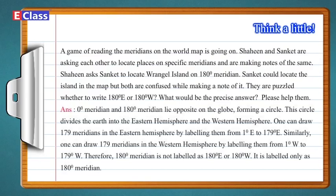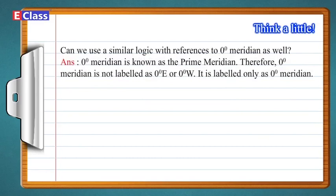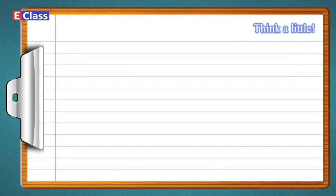Answer: The 0-degree and 180-degree meridians form a circle that divides the earth into the eastern hemisphere and the western hemisphere. One can draw 179 meridians in the eastern hemisphere labeled from 1°E to 179°E. Therefore, the 180-degree meridian is not labeled as 180°E or 180°W — it is labeled only as the 180-degree meridian. Similarly, the 0-degree meridian is known as the prime meridian and is not labeled as 0°E or 0°W — it is labeled only as the 0-degree meridian.